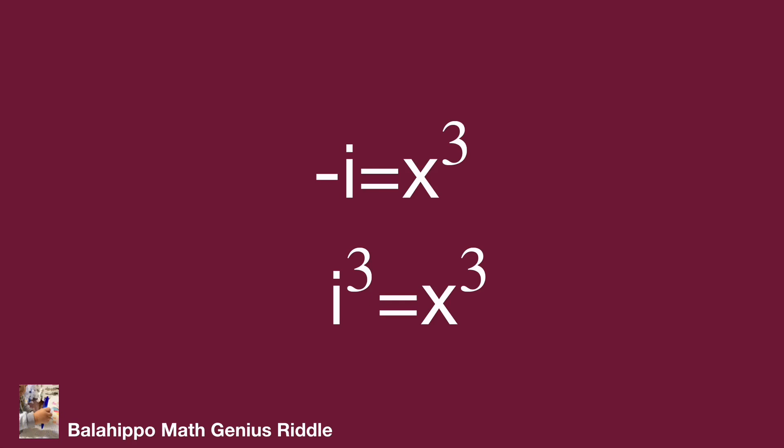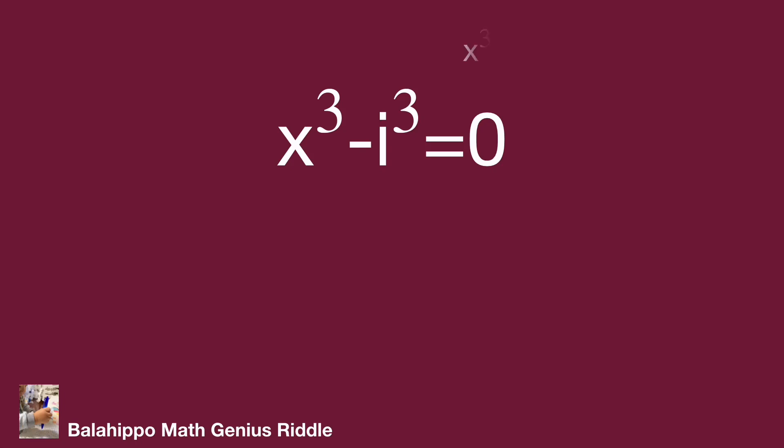After that, move all the items to one side as x cubed minus i cubed equals 0. I'm going to factor this equation. The formula is x cubed minus y cubed equals quantity x minus y multiplied by quantity x squared plus xy plus y squared.